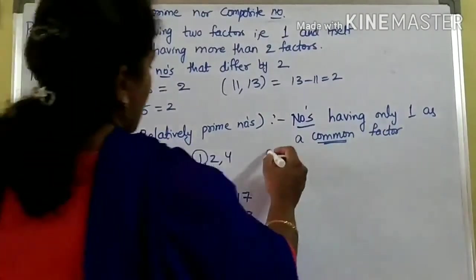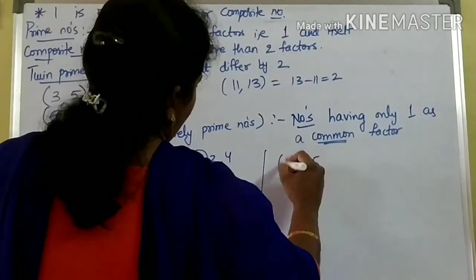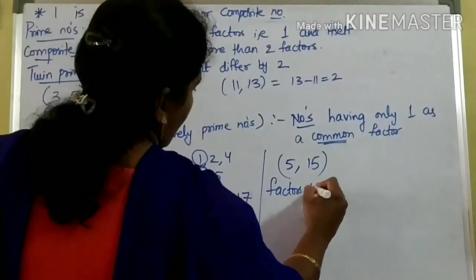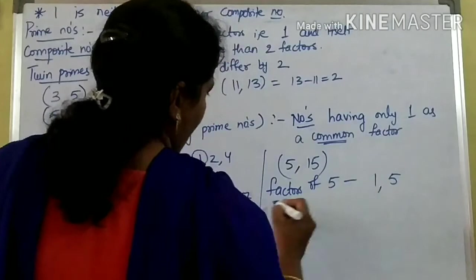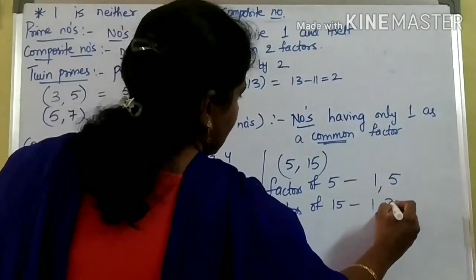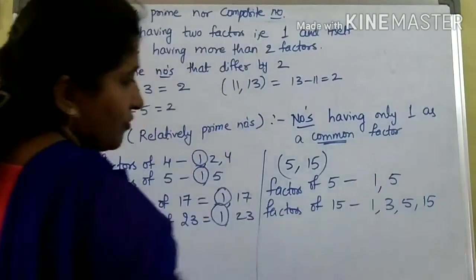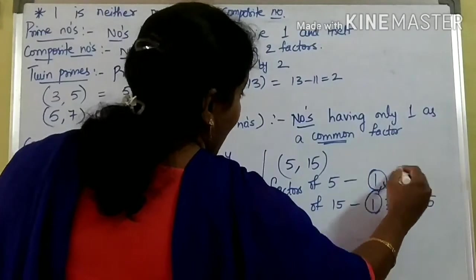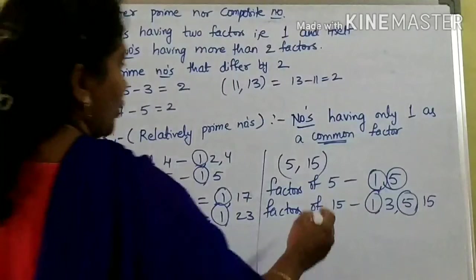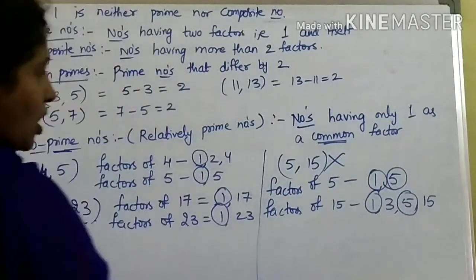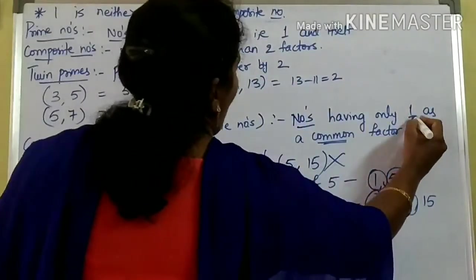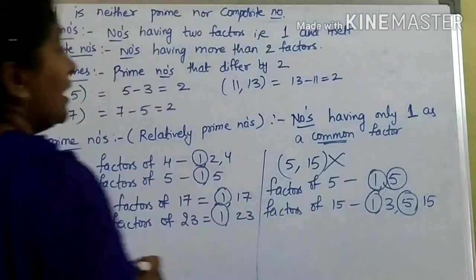So the co-prime numbers can be composite numbers also — they should contain only one as a common factor. One more example: are five and fifteen co-prime numbers? Factors of five are one and five. Factors of fifteen are one, three, five, and fifteen. What are the common factors here? One is common and five is also common. So can I say five and fifteen are co-prime numbers? No. Five and fifteen are not co-prime because they have one and five as common factors. Co-prime numbers should have only one as a common factor.